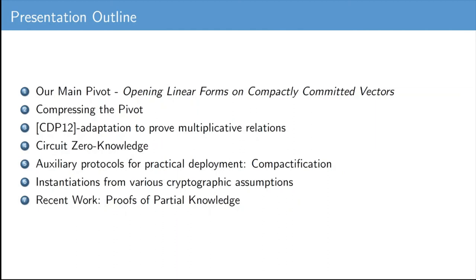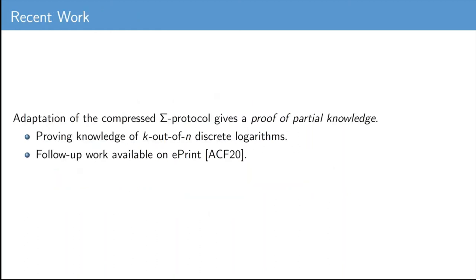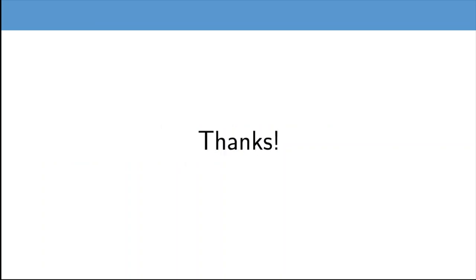Finally, we mention an application of this approach to other cryptographic protocols, such as proofs of partial knowledge. In a follow-up work, we show that an adaptation of our compressed sigma protocols gives rise to a proof of partial knowledge — for example, proving knowledge of k out of n discrete logarithms. Proofs of partial knowledge have found applications in ring signature schemes and confidential transaction systems. Thank you for your attention and enjoy the rest of this virtual conference.